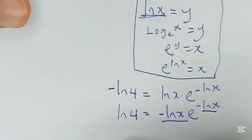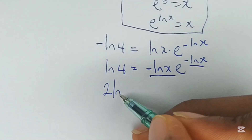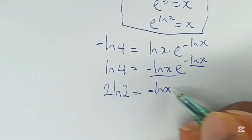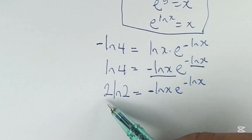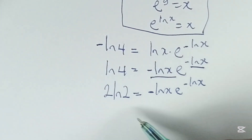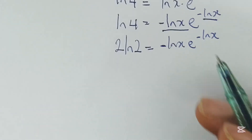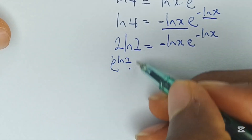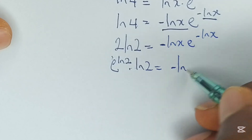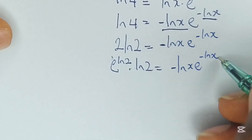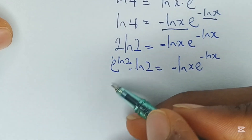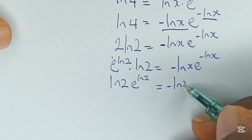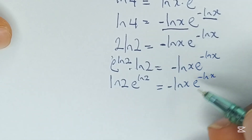So we have ln of 4 to be equal to negative ln of x times e to the power of negative ln of x. We cannot establish uniformity here, so solving for ln of 4, we can say that ln of 4 is equal to 2 multiplied by ln of 2, from the laws of logarithm. So we have minus ln of x times e to the power of minus ln of x to be equal to 2 multiplied by ln of 2. Moving on, 2 can also be written as e to the power of ln of 2, multiplied by ln of 2, to be equal to minus ln of x times e to the power of minus ln of x. Rewriting this, we can have ln of 2 times e to the power of ln of 2 to be equal to minus ln of x times e to the power of minus ln of x.